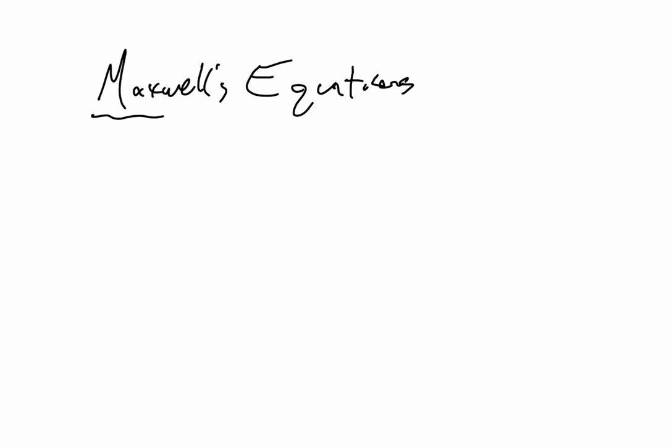All right everybody, welcome back to Trevor Wallace's videos from Ms. Jones period six AP physics class. Today, to wrap up magnetism and electromagnetism, we're going to be discussing Maxwell's equations. Maxwell's equations, which we're going to be talking about in the integral form today, are a set of equations that basically describe the interactions between electric and magnetic fields. So let's get right into it.